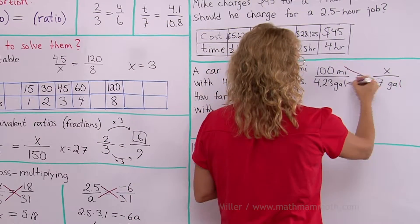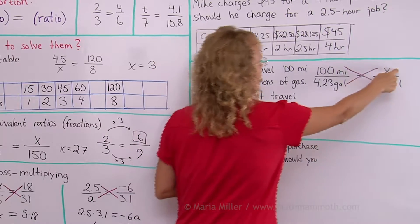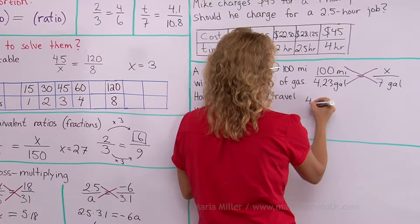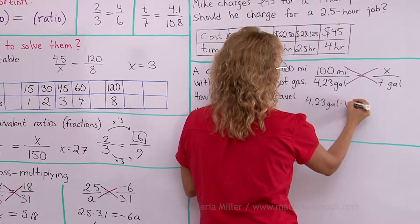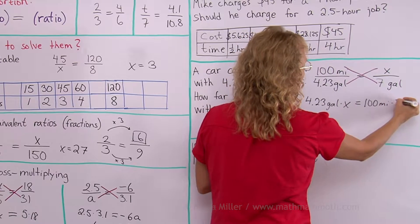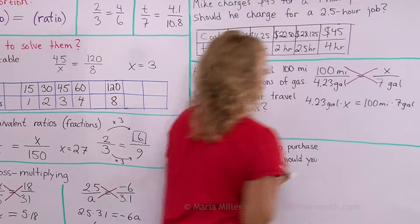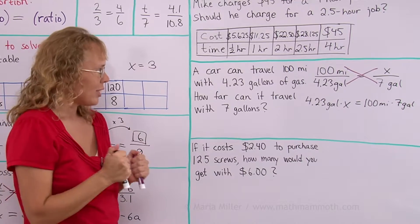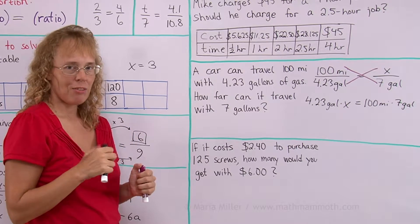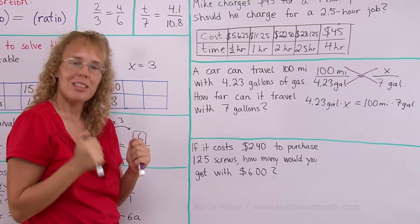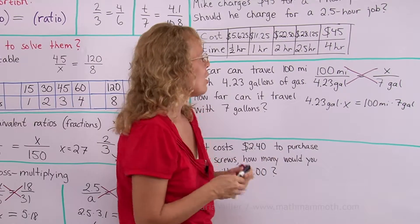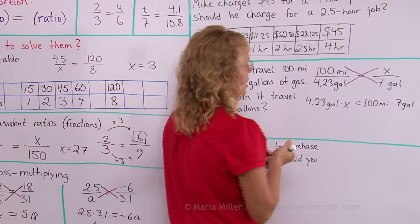Now I cross multiply. My unknown gets multiplied by 4.23. So I will get 4.23 gallons times x and on this side 100 miles times 7 gallons. You can keep those units gallons and miles there if you want to or you can drop them if you are sure what your answer will be. I am sure that my answer will be in miles. So I just drop the gallons and miles from this calculation.